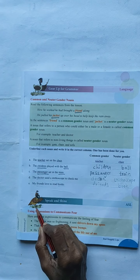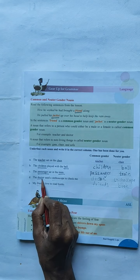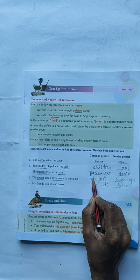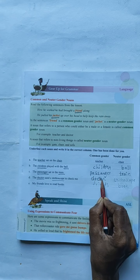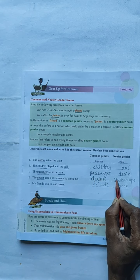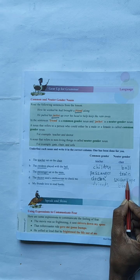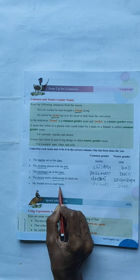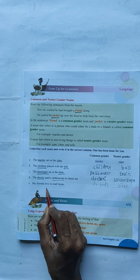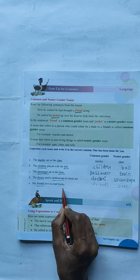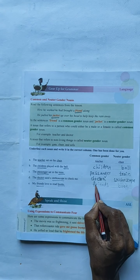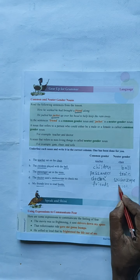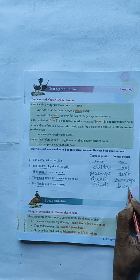The fourth one is, the doctor used a stethoscope to check me. Here, the doctor and stethoscope. Two words, you have to write in this side. Doctor is a common gender. Stethoscope is a nature gender noun. The last one is, my friends love to read books. Here, friends and books. Friends, it means common gender nouns. Books means nature gender nouns.